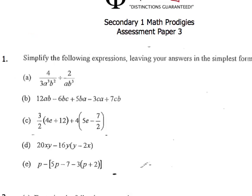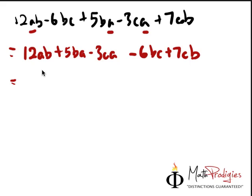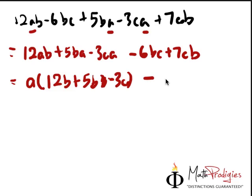So from here, what happens is we can take out the a, right? And we have 12b plus 5b minus 3c. And on this side, we have minus. Okay, now this is very important. You must make sure that whenever you have a minus sign on the side, you want to actually put a bracket around it. So minus bc, 6 plus 7. 6 minus because minus times minus gives you plus. So minus 7.